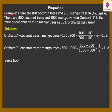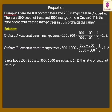Since both 100 is to 200 and 500 is to 1000 are equal to 1 is to 2, the ratio of coconut trees to mango trees in both the Orchards is the same.